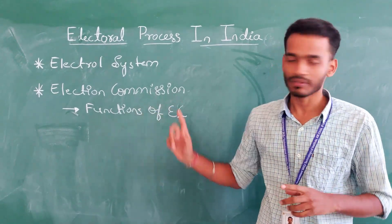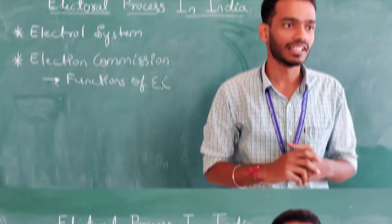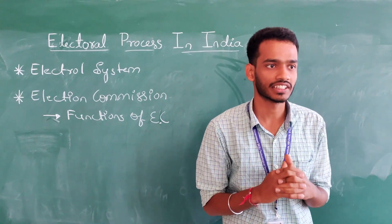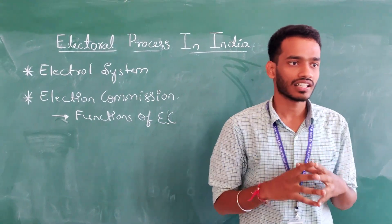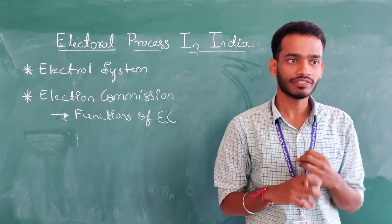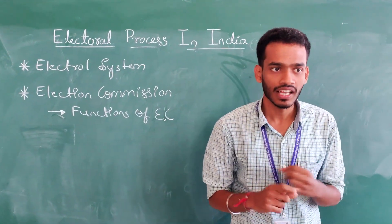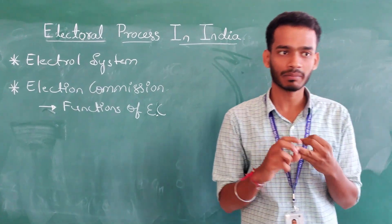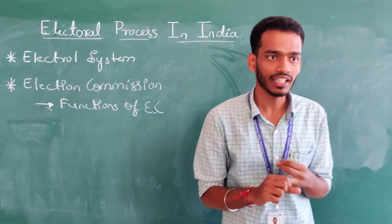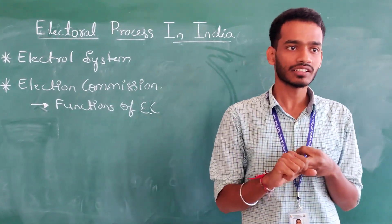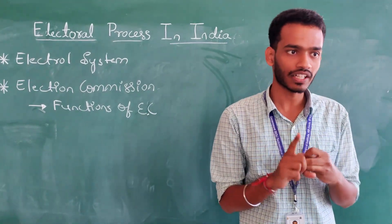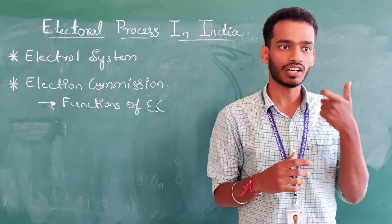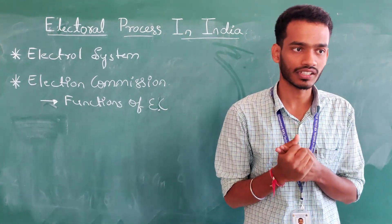The second term is the election commission. It is an organization that deals with the conduction of elections. It consists of one Chief Election Officer and one Election Commission Officer, appointed by the President of India. Each state has one Chief Electoral Officer, and each constituency has an election registration office.